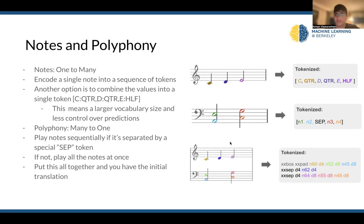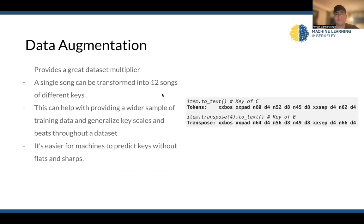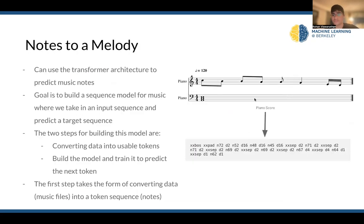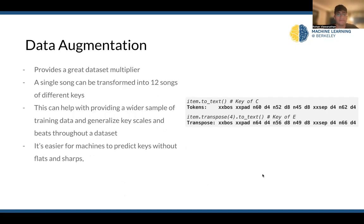Putting this all together, you can get your initial translation from a piano score to a tokenized form, which is very cool. The next thing to touch on is data augmentation — this provides an amazing dataset multiplier to simply get more data. A single song can be transformed into 12 songs of different keys, which can help increase our sample of training data and generalize key scales and beats throughout a dataset. The more data you have, the better and more generalized your model will be. We've talked about this thoroughly with images as well — for small images with a lack of information, convolutions outperform transformers, but when you have a lot of information, transformers far outperform classical methods.